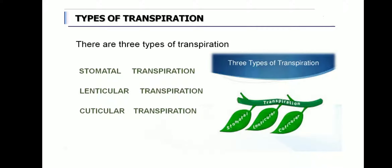There are three types of transpiration: stomatal transpiration, lenticular transpiration, and cuticular transpiration. Excess water is lost from the plant parts — the root, stem, and leaf — and through all these parts the water is lost and removed from the plant.